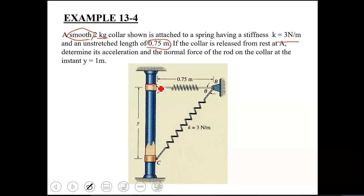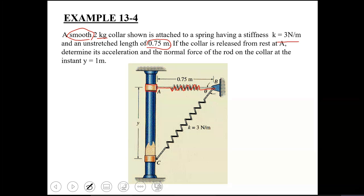The spring has an unstretched length of 0.75 meters. When the collar is at position A, the spring is in its unstretched position. So you have this spring in its unstretched position once this collar is at position A.